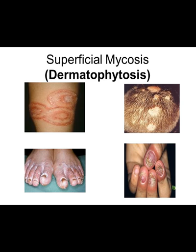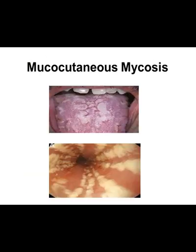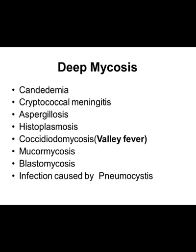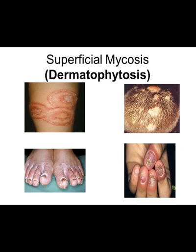As you can see in this diagram, fungal infections are divided into superficial mycosis, mucocutaneous infections, subcutaneous infections, and deep mycosis. This diagram is also showing the different types of dermatophytosis, which includes infections of the scalp, fungal infections of nails, body, and feet.